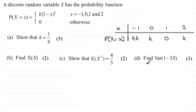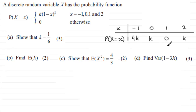For the last part D, we've got to find the variance of 1 minus 3x for this discrete random variable x, which has this probability function. We've already seen in earlier parts that the distribution function for x is given by this table here, and we found that k was 1 sixth.